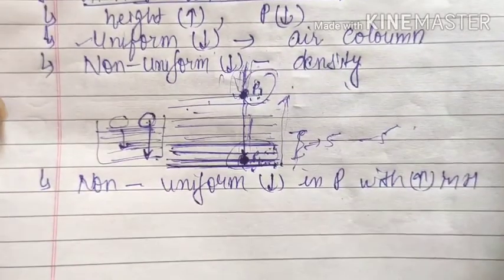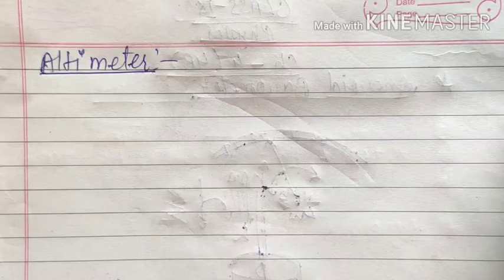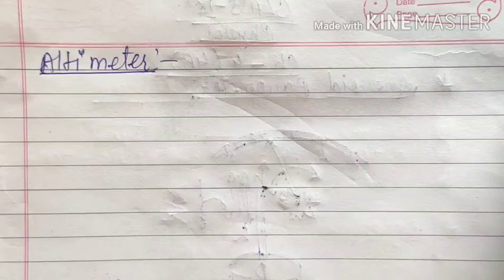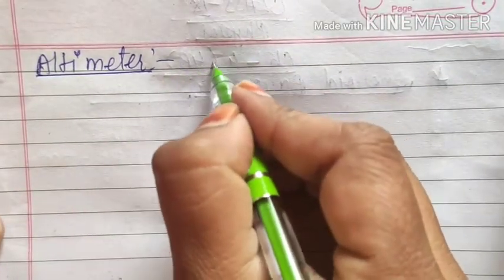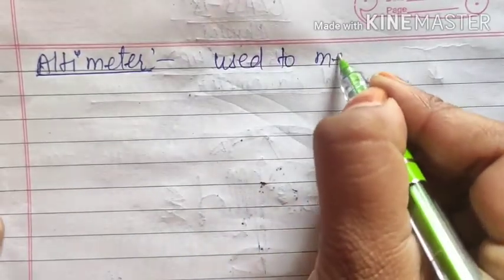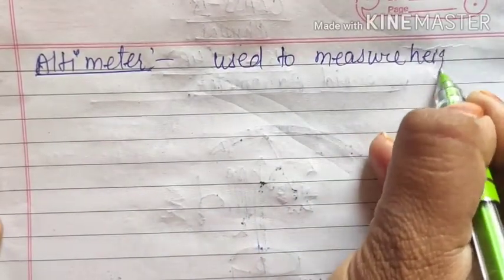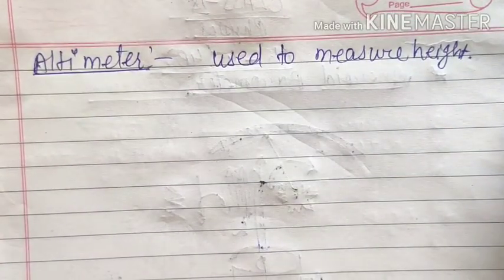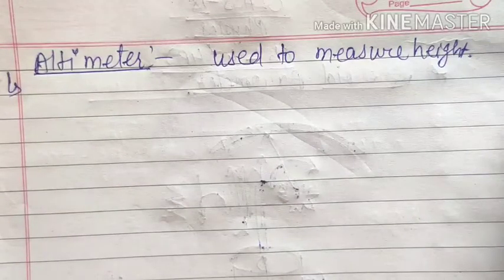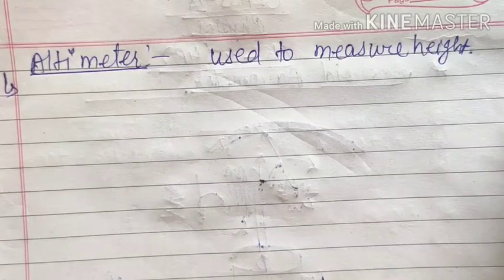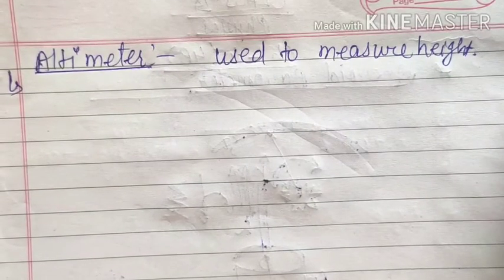Now we will discuss the altimeter. As we learned from the aneroid barometer, with increase in height the pressure decreases. Therefore we can make an instrument that gives us the measurement of height. An altimeter is a device used to measure height, but with the help of pressure. As we move in the upward direction the pressure decreases, and we can get an idea about the change in height.